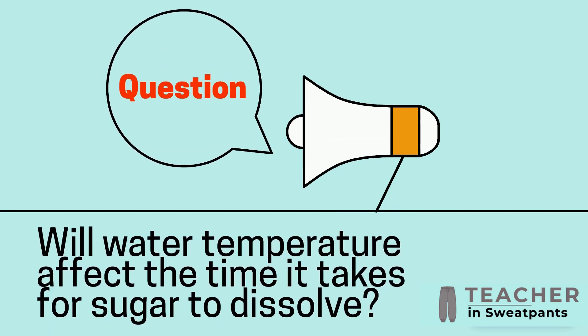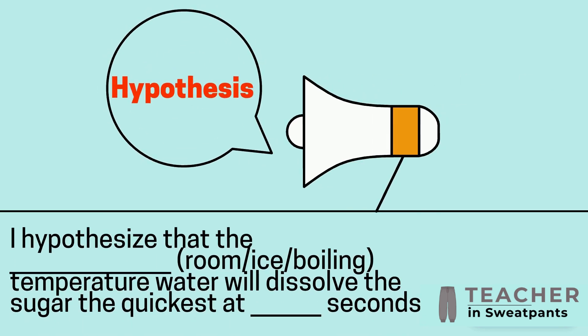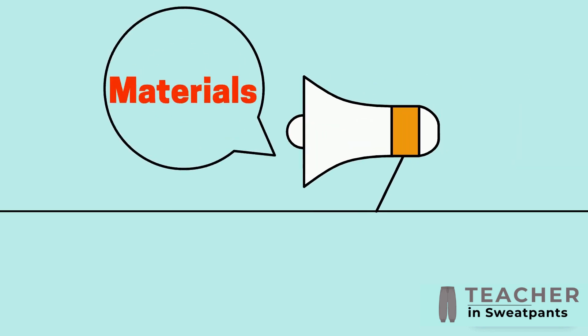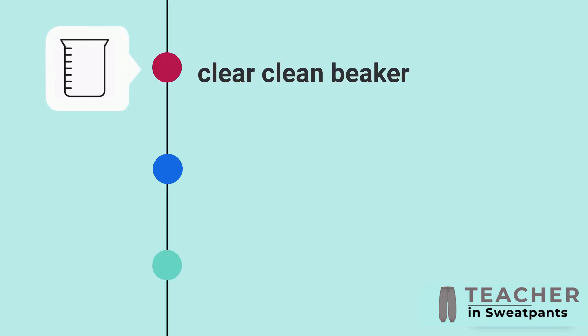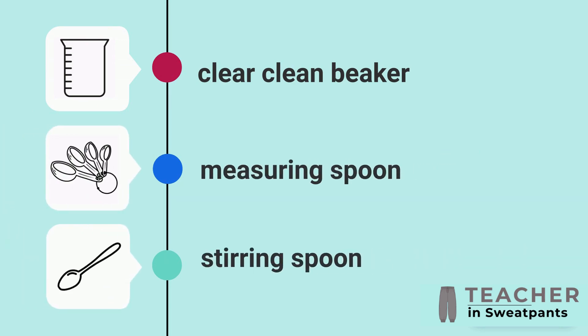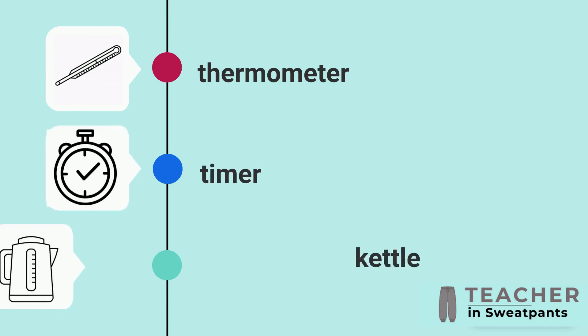Question: Will water temperature affect the time it takes for sugar to dissolve? I hypothesize that room temperature, ice, or boiling water will dissolve the sugar the quickest at blank seconds. Materials needed: clean beaker, measuring spoon, stirring spoon, thermometer, timer.